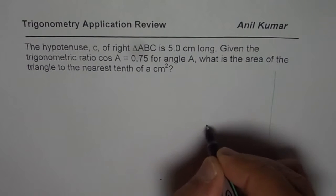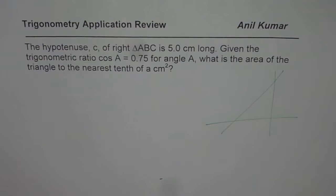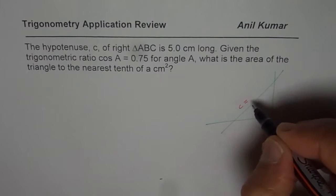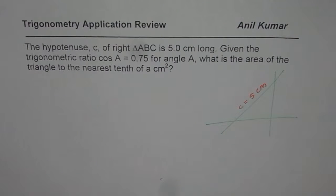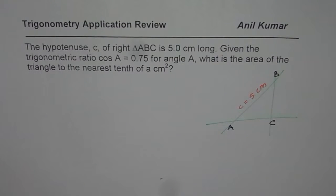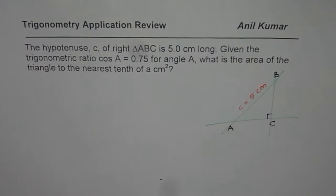So first let us sketch a right triangle. Let us say this is our right triangle. Now we know side C, so C is the hypotenuse which is equal to 5 cm. The side opposite to C should be capital C. A and B are the other two vertices of this triangle and we know this is a right triangle.